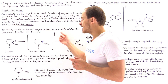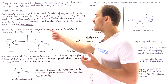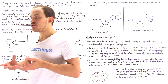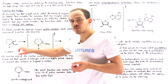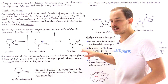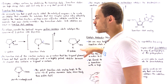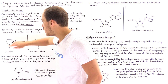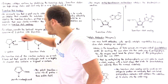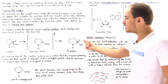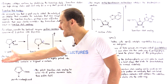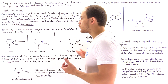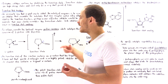Let's begin by examining an enzyme found in bacterial cells known as proline racemase. Proline racemase catalyzes the isomerization reaction of L-proline into D-proline. The difference between L-proline and D-proline lies in the stereochemistry at the alpha carbon, and proline racemase catalyzes the transformation of these two molecules back and forth.